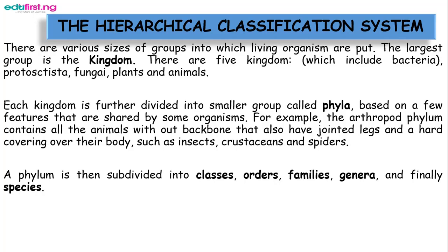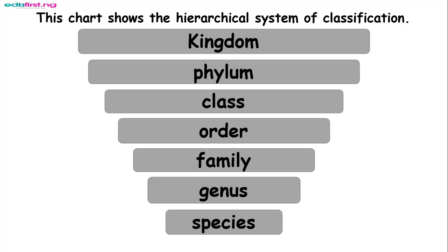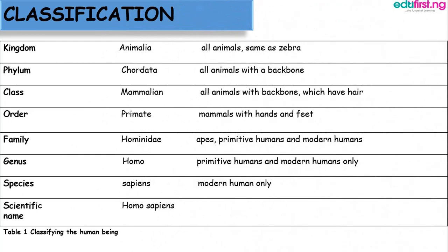Looking at this chart showing the hierarchical system of classification: the first level is the kingdom. Organisms in this kingdom lack organized DNA and have no mitochondria in their cells. They are microscopic single-celled organisms and they feed either autotrophically or heterotrophically.